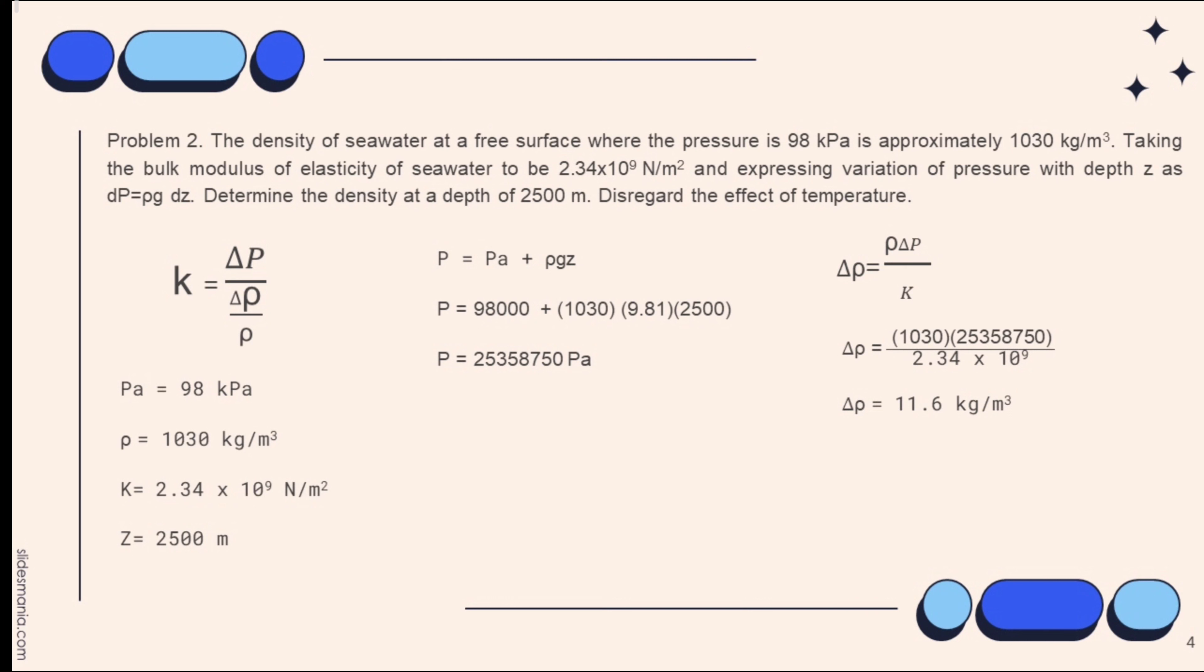Then, rewrite the equation of bulk modulus of elasticity to get the change in density. Change in density equals density times change of pressure over bulk modulus. Change in density equals 1,030 times 25,358,750 over 2.34 times 10 raised to 9. Change in density equals 11.6 kilogram over meter cube.